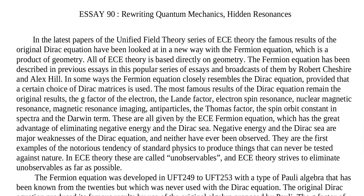These are all given by the ECE Fermion equation, which has the great advantage of eliminating negative energy in the Dirac sea. Negative energy in the Dirac sea are major weaknesses of the Dirac equation and neither have ever been observed. These are the first examples of the notorious tendency of standard physics to produce things that can never be tested against nature. In ECE theory, these are called unobservables, and ECE Fermion theory strives to eliminate unobservables as far as possible.